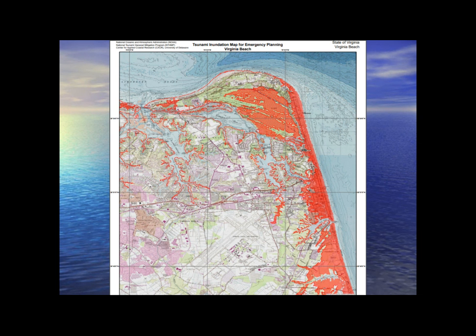Some significant Atlantic tsunamis include Puerto Rico on October 11, 1918. A 7.3 magnitude earthquake in the Mona Passage west of Puerto Rico displaced four segments of a normal fault. The earthquake generated a tsunami with run-up heights of six meters, causing extensive damage along the western and northern coast of Puerto Rico — $29 million in damage in 1918 money, 106 people killed, and 100 reported missing.